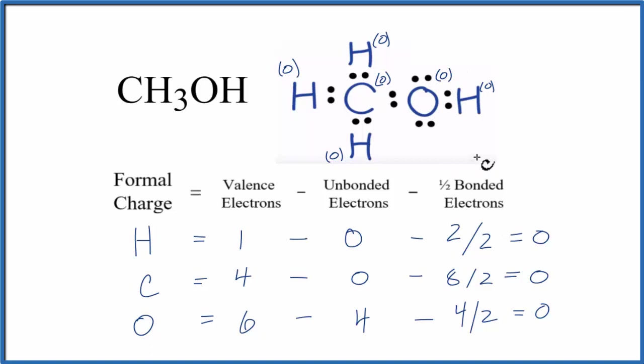As you can see, all the formal charges are 0. And that's what we would expect for the most likely or favorable Lewis structure for CH3OH. This is Dr. B, and thanks for watching.